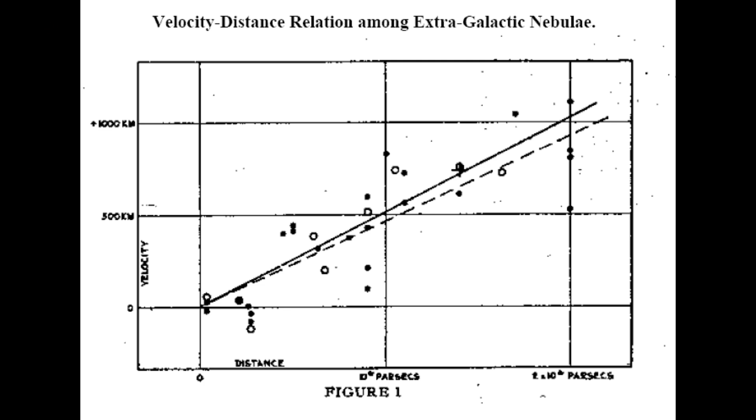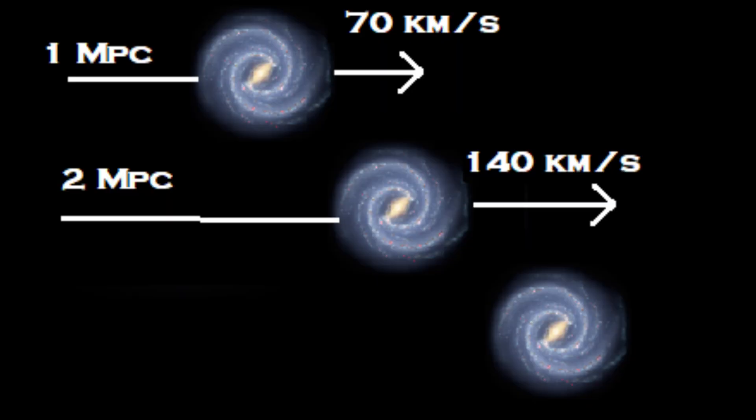Let's return to the expansion of the universe. Due to the expansion, governed by Hubble's law, the farther a galaxy is from us, the faster it is moving away. For instance, a galaxy at a distance of 1 megaparsec is receding from us at a speed of 70 km per second, while a galaxy at a distance of 2 megaparsecs is moving away at a speed of 140 km per second, and so on.